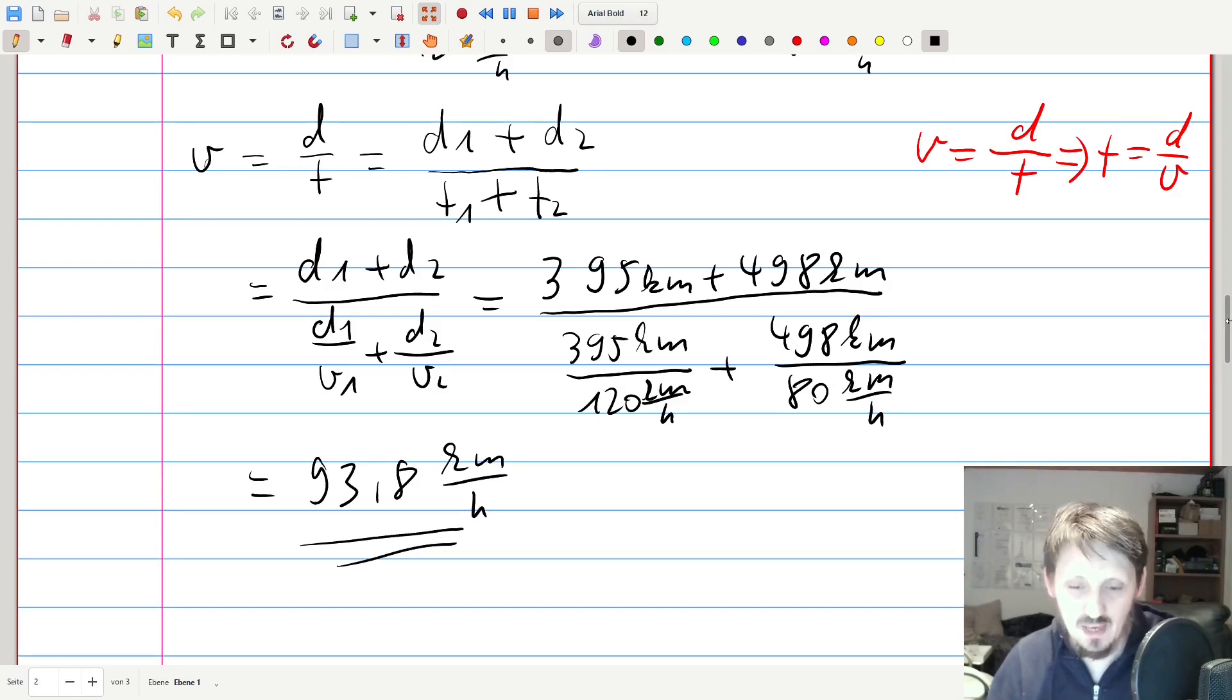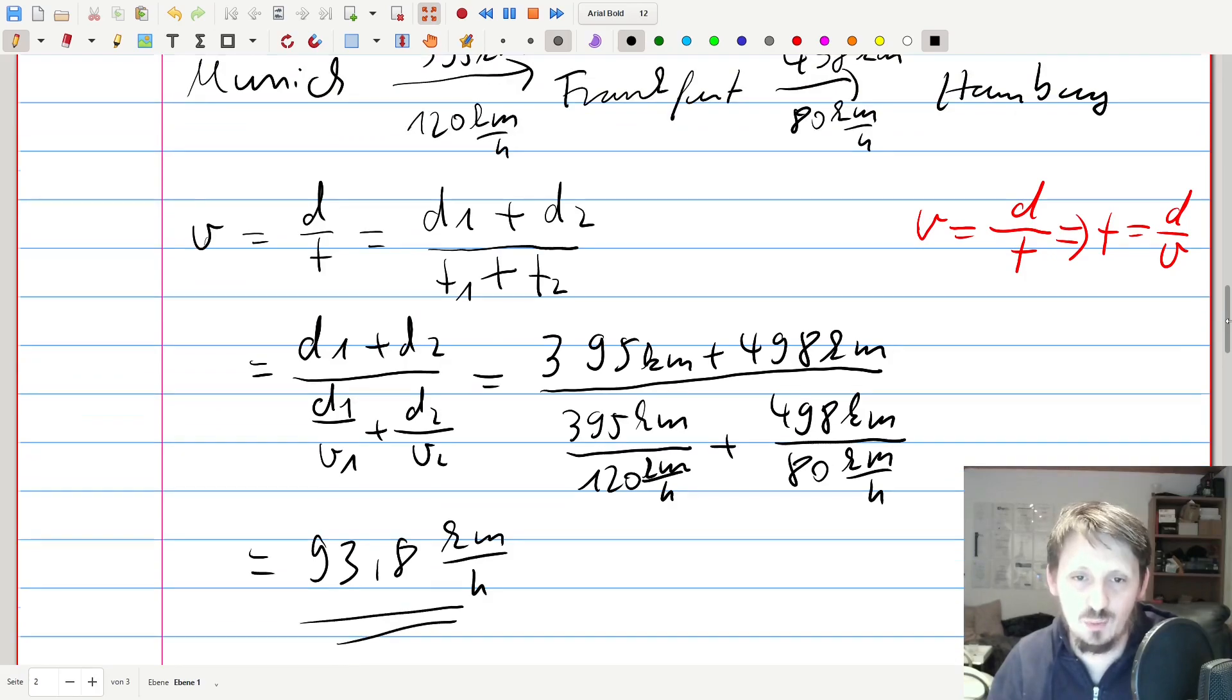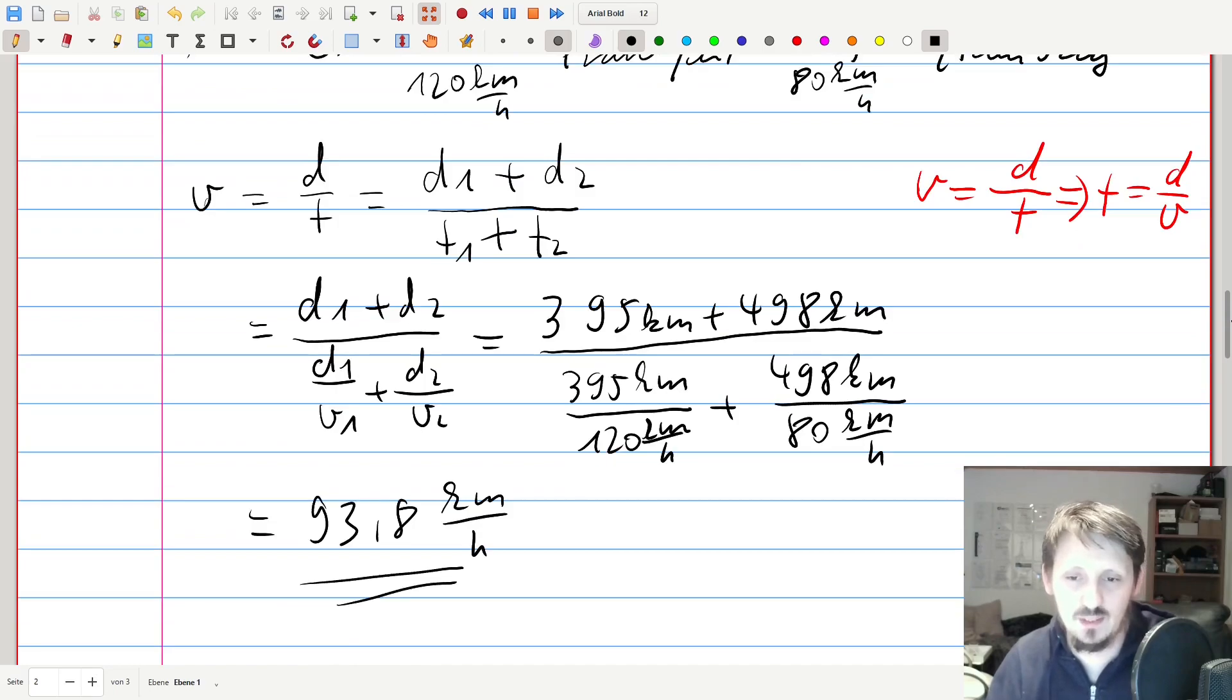So at the end, I calculated this with a calculator, and I got as a result 93.8 km per hour as the final result. So you can see the average speed is here a little bit closer to the 80 km than to the 120 km, and this is just because of the longer distance that has been traveled with the smaller speed.